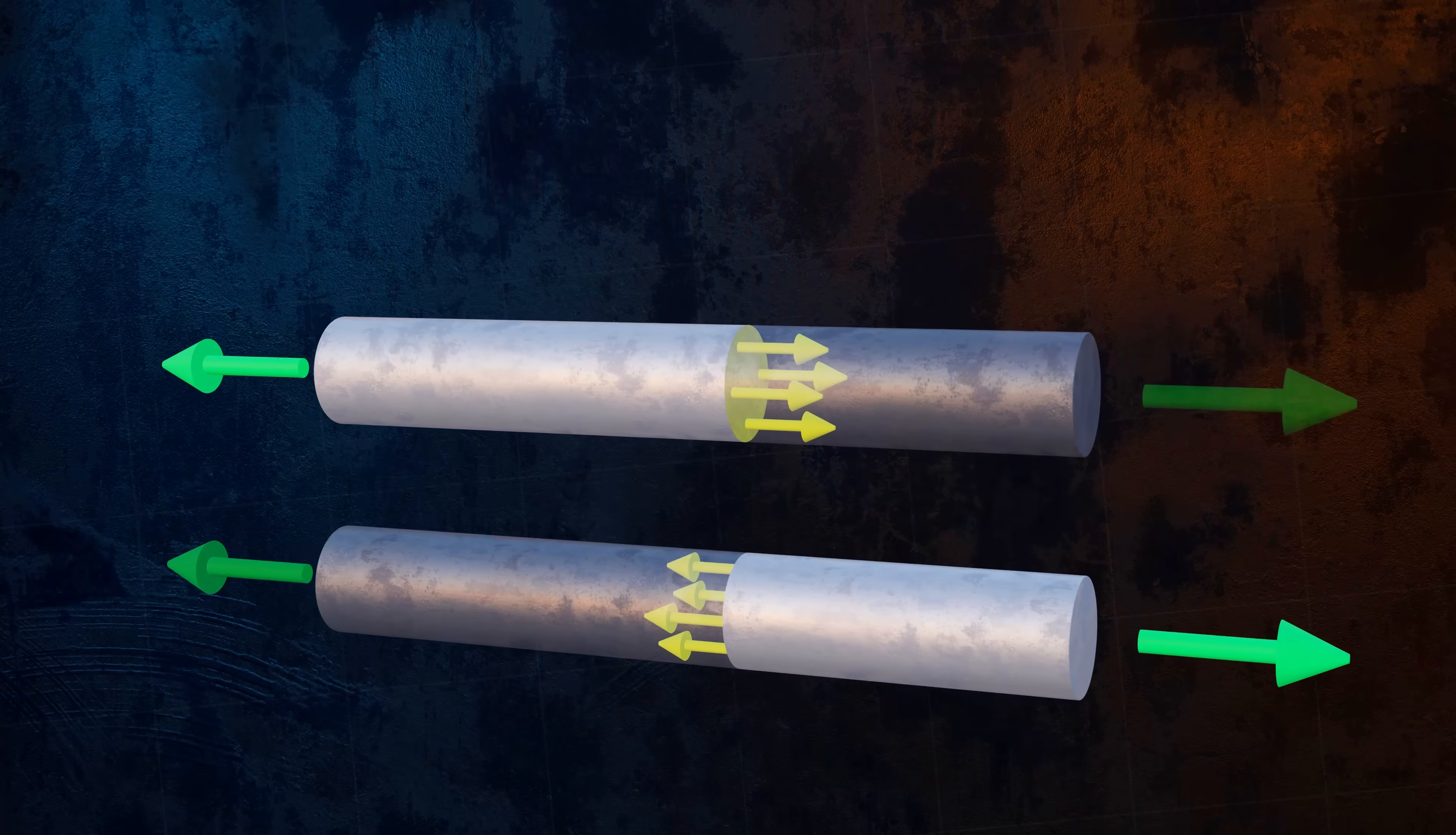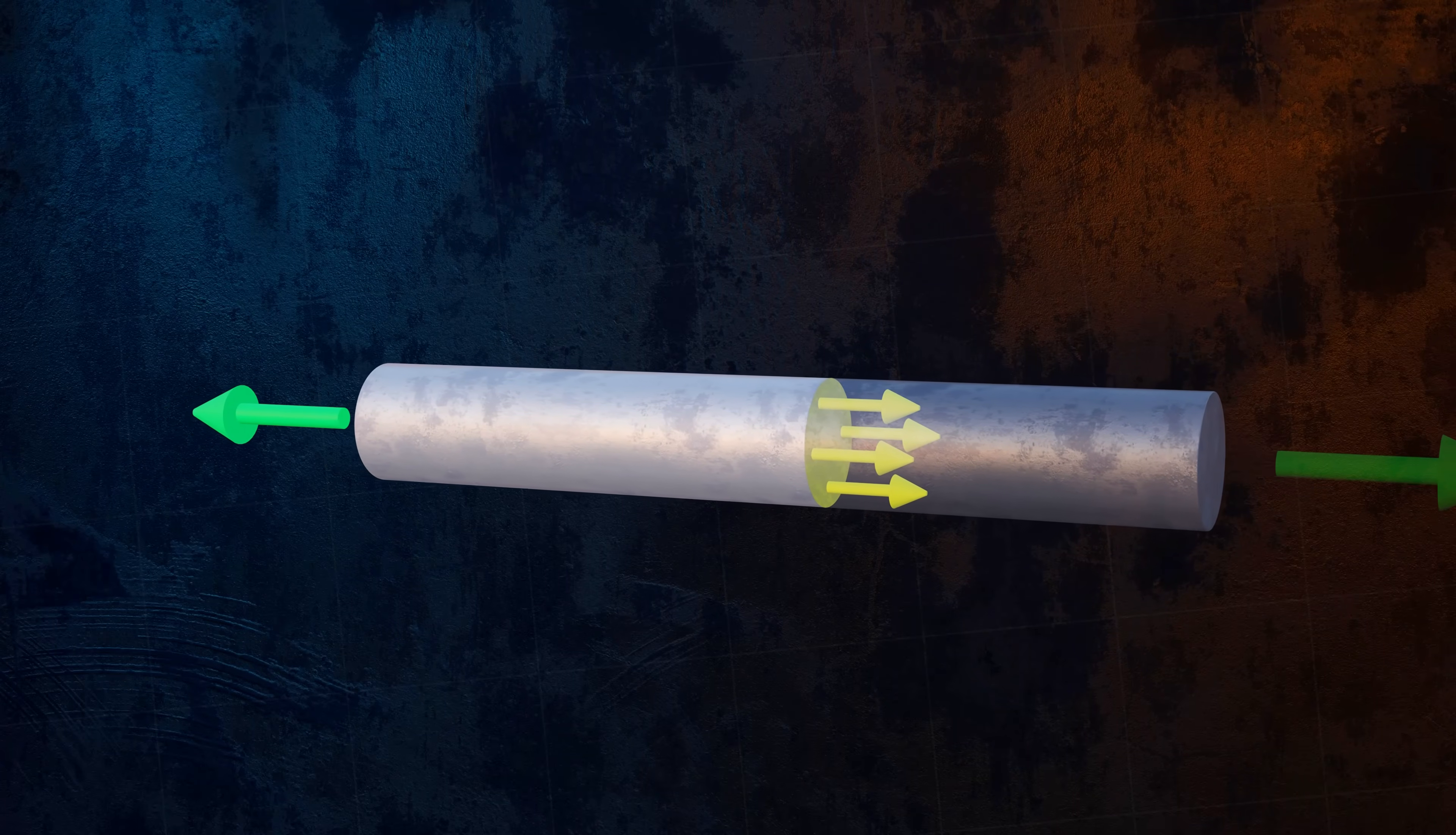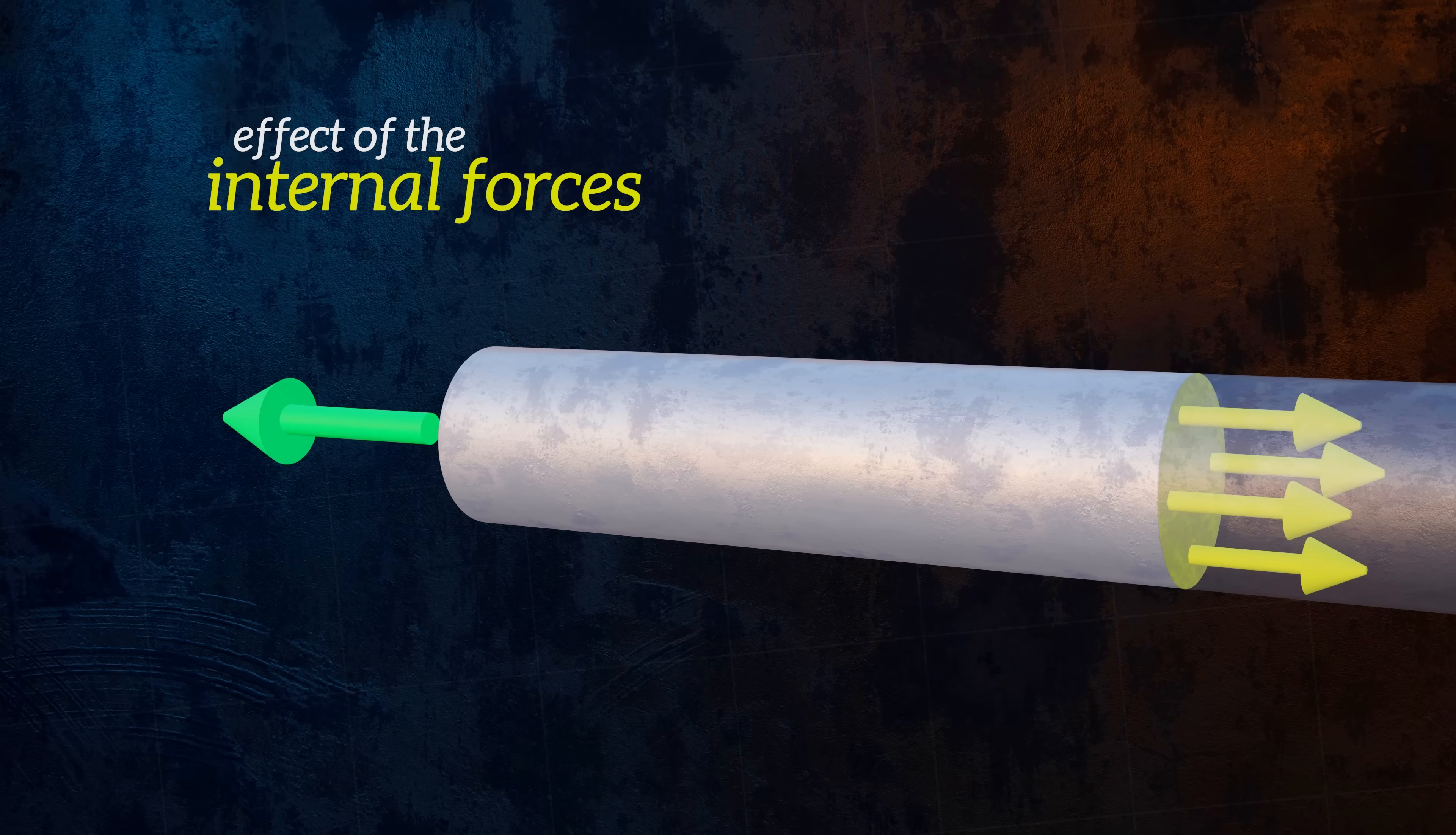For any imaginary cut like this one, the internal forces develop in such a way that equilibrium will be maintained. In this case, the effect of the internal forces acting on the cross section created by our cut will be equal to the effect of the applied external force.